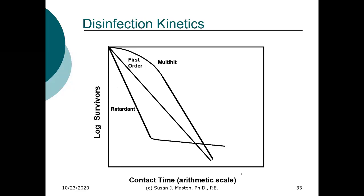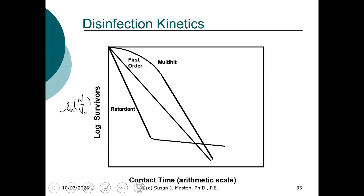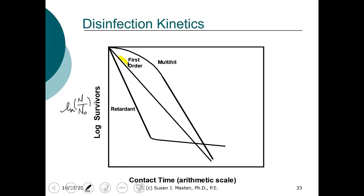This is a plot of log(N/N₀) — the number of organisms at any time divided by the initial number of organisms — using either natural log or log base 10. The yellow line shows our first-order decay: ln(N/N₀) = −kT.